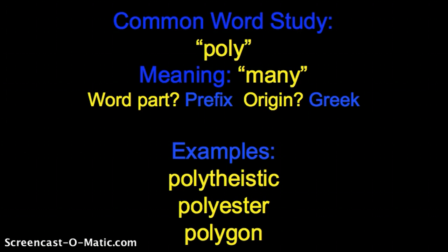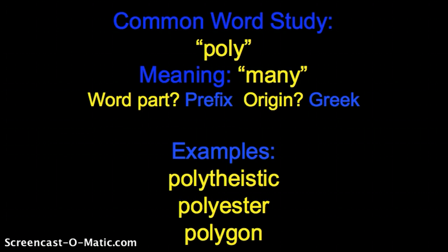The second word is polyester. Polyester is a type of fabric. The reason it's called polyester is because it's woven from many different types of fabrics. Many different types of fabrics go into something that is polyester in nature. It's not just cotton or just silk, but it's a blend of many different types of fiber.